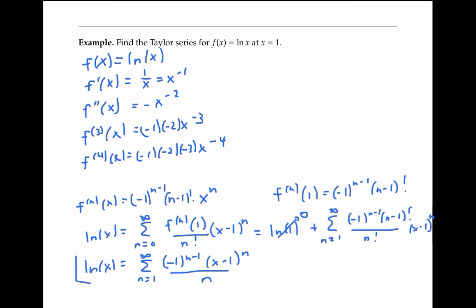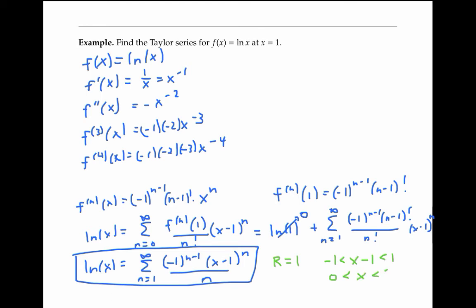This simplifies to ln(x) is equal to the sum from n equals one to infinity of negative one to the n minus one times x minus one to the n over n, since the n minus one factorial cancels with almost all of the n factorial, leaving just the factor n in the denominator. So I now have a formula for the Taylor series for ln(x). It's easy to check using the ratio test that this power series has a radius of convergence of one, and so it converges when x minus one is between negative one and one — in other words, when x is between zero and two. Although I won't prove it here, it turns out that this Taylor series really does converge to ln(x) on the interval for x greater than zero and less than or equal to two.